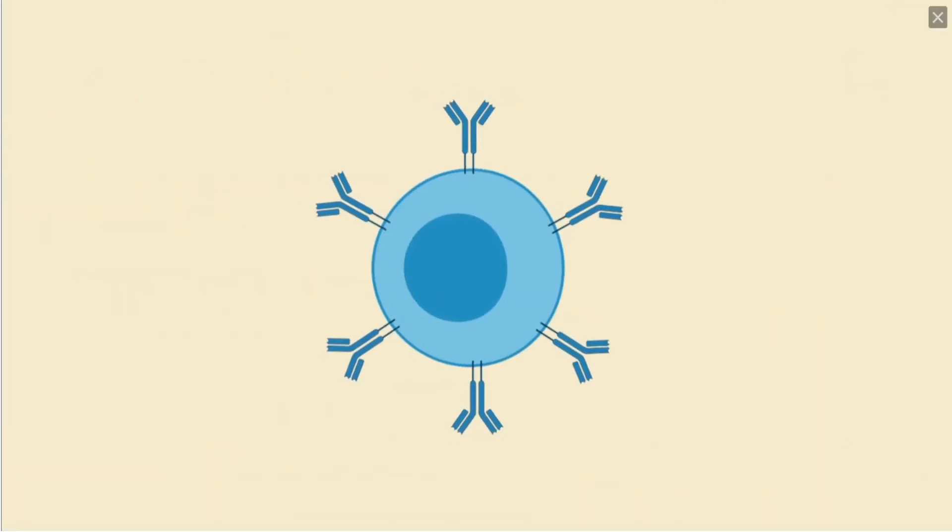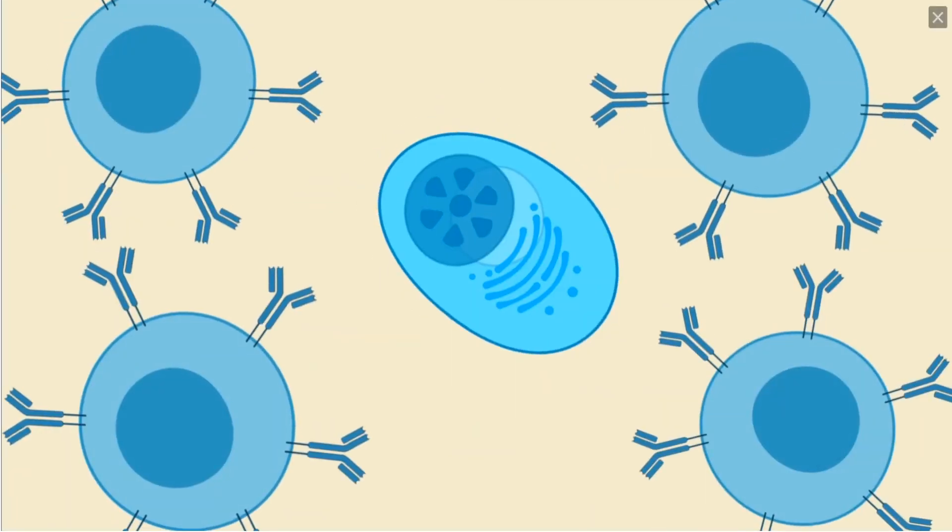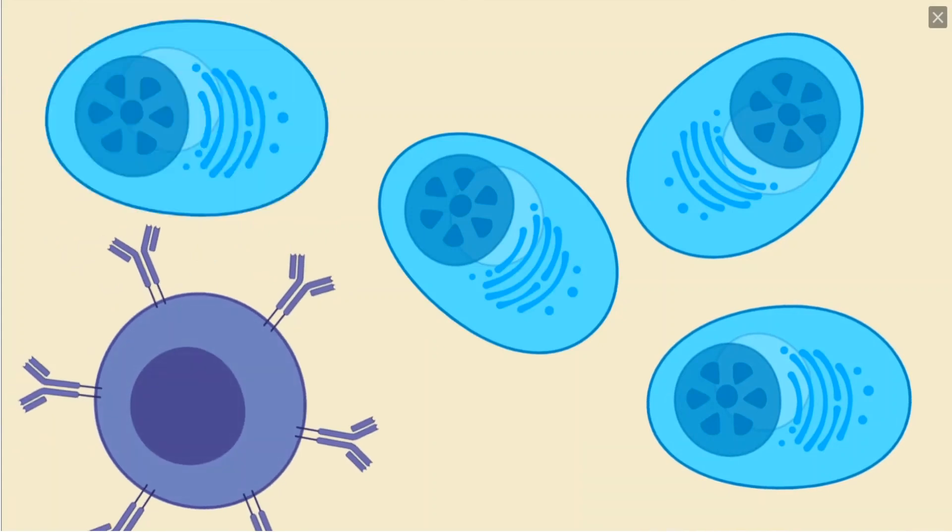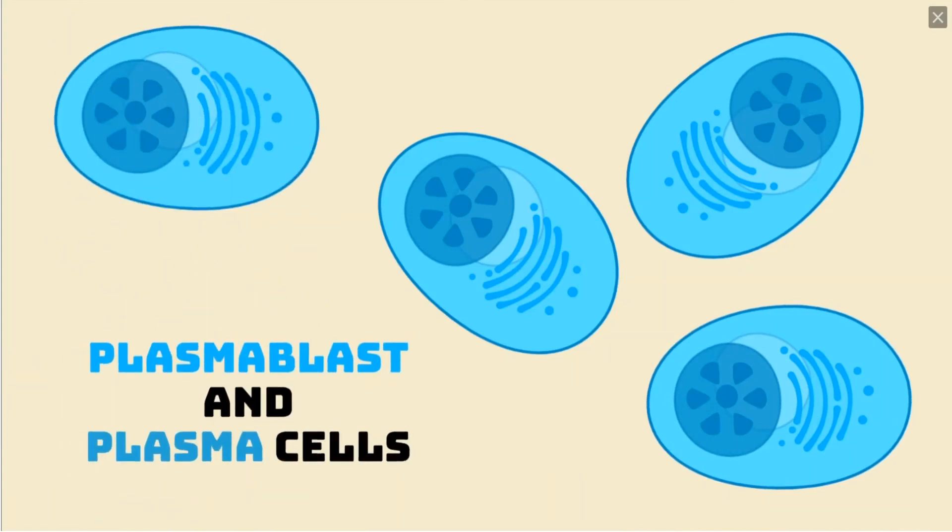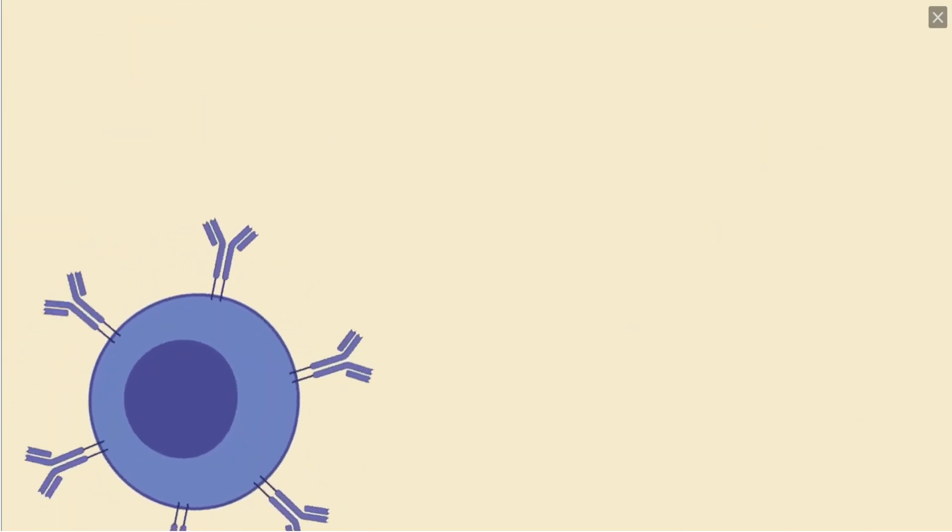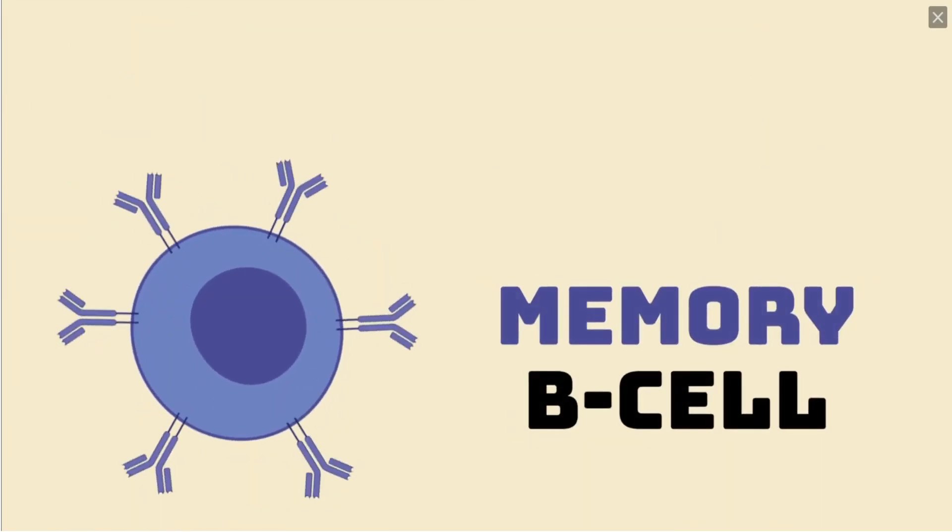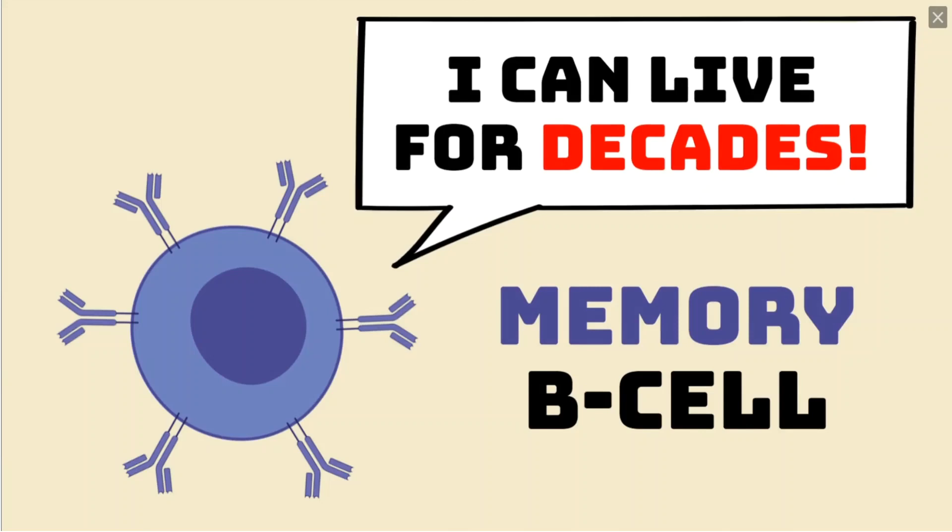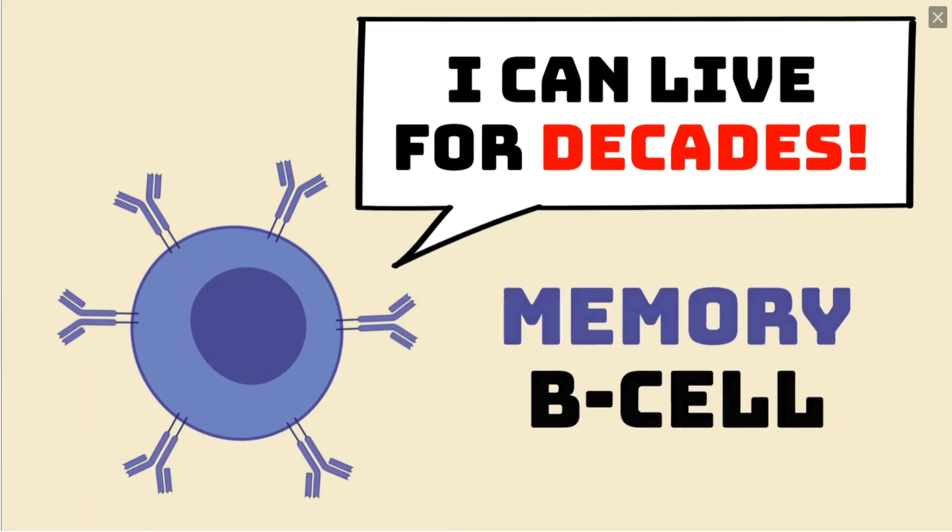Once activated, B cells multiply and then specialize to perform functions. Most B cells become plasma blasts, and later plasma cells, initially secreting low-affinity antibodies of a single class, before slowly improving its affinity, as well as switching into other classes of antibodies that can bind to and aid in the fight against the pathogens. However, some also become what are known as memory B cells, becoming able to live for an extremely long time, as well as circulating the body in case the pathogen returns.